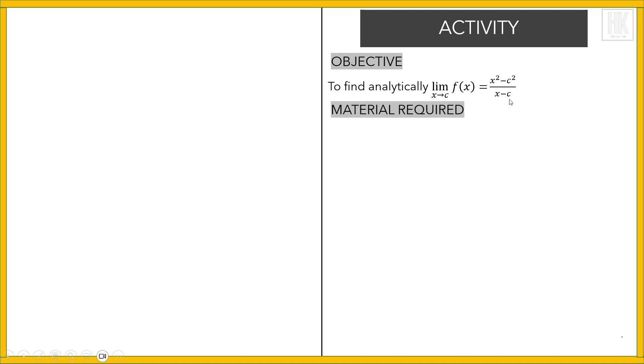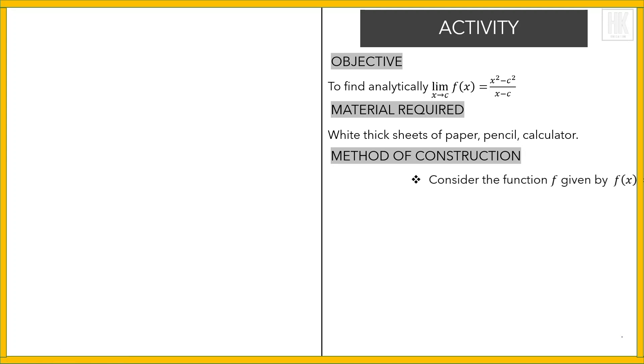Material required for this is white thick sheets of paper, pencil, and calculator. Method of construction: Consider the function f(x) = (x² - 9)/(x - 3), where we have taken c as 3.